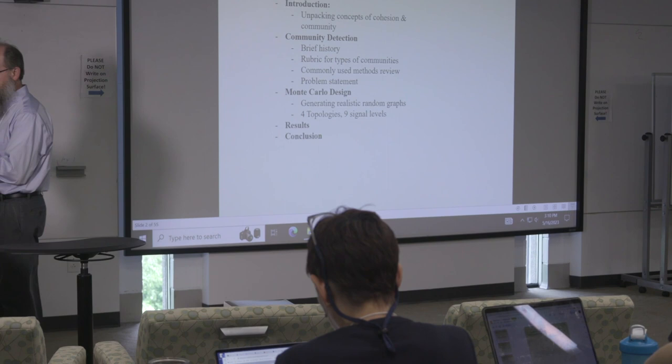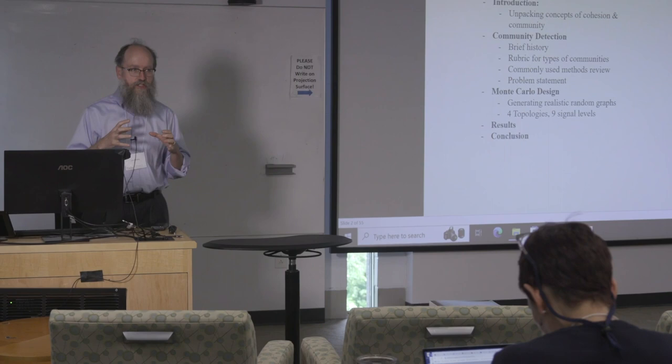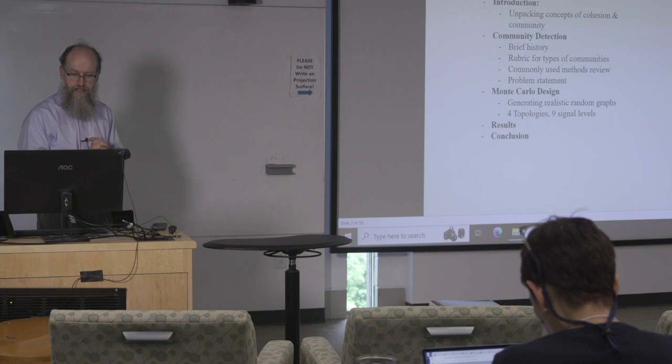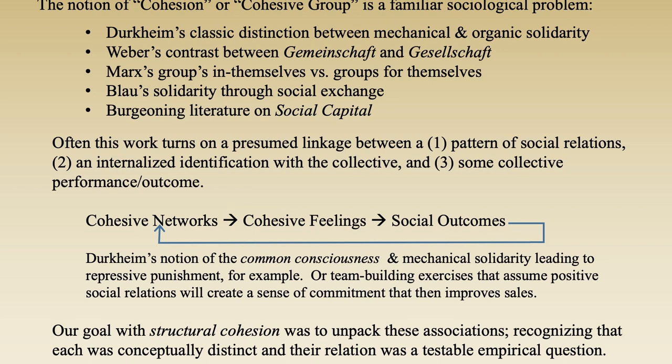The way we do that is to unpack a little bit theoretically what community detection is — what the cohesion part of a cohesive group means. We'll talk about the history and rubrics of finding communities, and then discuss a Monte Carlo design with eight topologies, nine signal levels, and 15 different community detection routines.